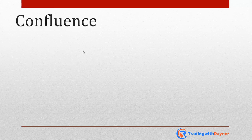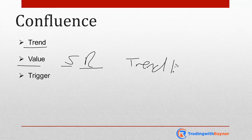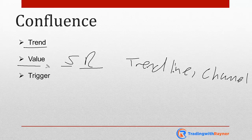So what are the things I look for in confluence? Number one is the trend, number two is the value, and number three is the trigger. Trend is pretty self-explanatory — if it's an uptrend, I'll look to long; if it's in a downtrend, I'll look to short; if it's in a range, I can either go long or short. Value is a simple concept — support and resistance are areas of value, because you want to buy low, sell high. You can long support, you can sell resistance. Similarly, you can use trend lines, channels, or moving averages to identify areas of value. And the trigger is the specific price pattern that leads you to buy or sell — and this is where your candlestick pattern comes into play.